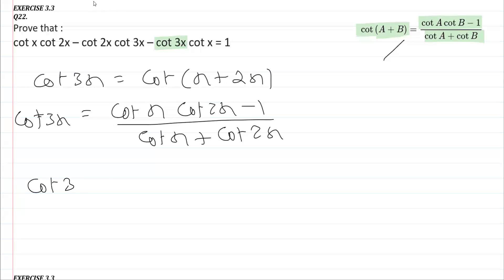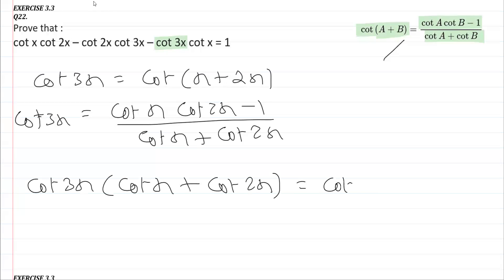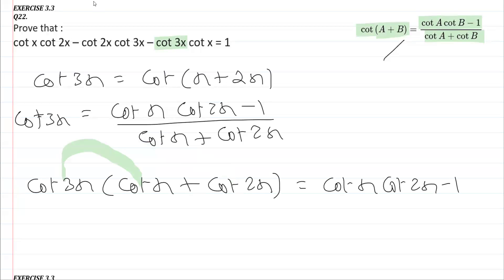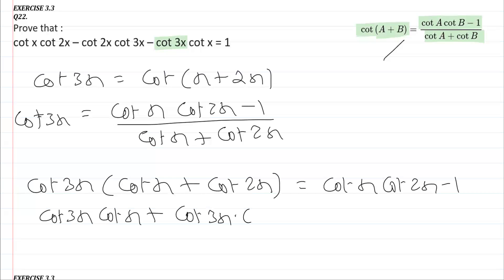Now I'm going to apply cross multiplication. So cot 3x multiplied by cot x plus cot 2x equals the numerator cot x into cot 2x minus 1. Applying the distributive property — multiplying cot 3x with each term — we get cot 3x into cot x plus cot 3x into cot 2x, and that equals cot x into cot 2x minus 1.